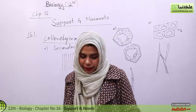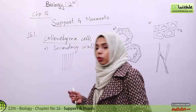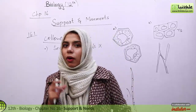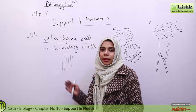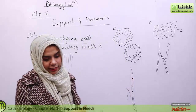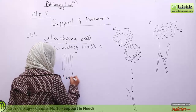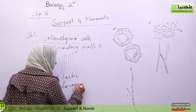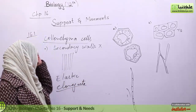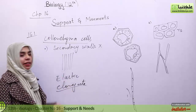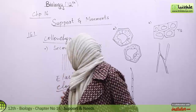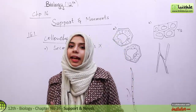In young plants which are herbaceous in nature — which have a very soft stem — it is the collenchyma cells that provide support. These cells are elastic and elongated. The reason why these cells elongate is because they have the ability to divide as they have protoplasts. They are living cells, so they elongate as the stem or leaf elongates, and the collenchyma cells increase accordingly.